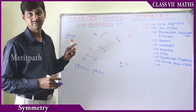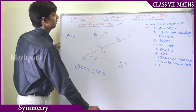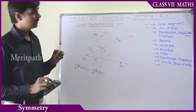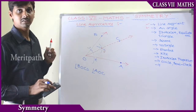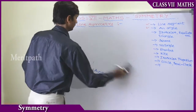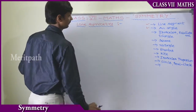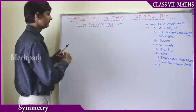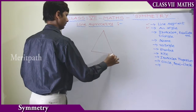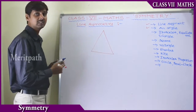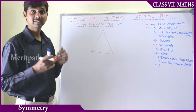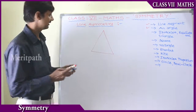So this is the line of symmetry we call. Now let's take an isosceles triangle. We have learnt in triangles that the triangle which has two sides equal is called an isosceles triangle.